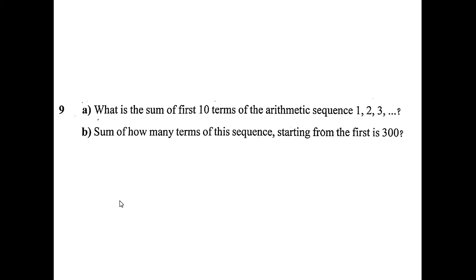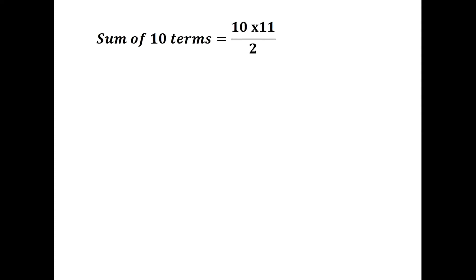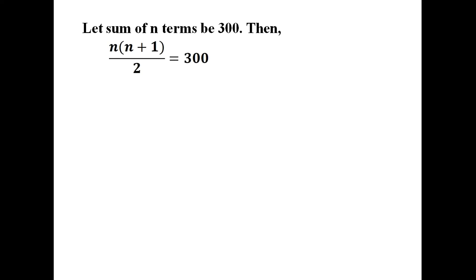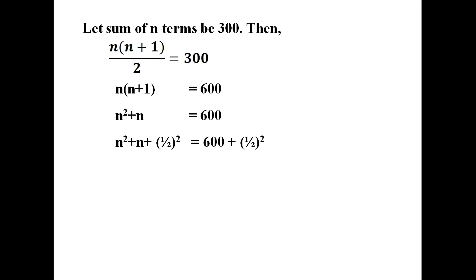The ninth problem: what is the sum of the first 10 terms of the arithmetic sequence 1, 2, 3, etc.? How many terms of the sequence starting from the first have a sum of 300? We know the sum of n terms of this arithmetic sequence is n(n + 1)/2. Therefore, sum of 10 terms equals 10 × 11/2, which is 55. For the second part, let the sum of n terms be 300. Then n(n + 1)/2 = 300, so n(n + 1) = 600. Expanding: n² + n = 600.